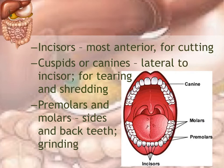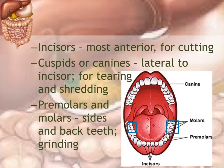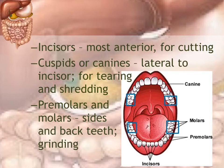The cuspid or canine teeth are the vampire-type teeth located just next to the incisors. The premolars are just behind the canines, and the molars are on the sides. The molars and premolars grind and mash food into small bits, while the canines are sharp and puncture, tear, and shred meat. Animals that are purely carnivores have very sharp canines, while herbivores have more molars and premolars for grinding plant material.